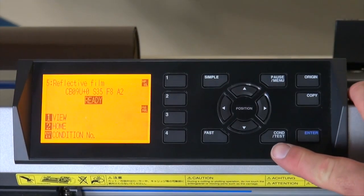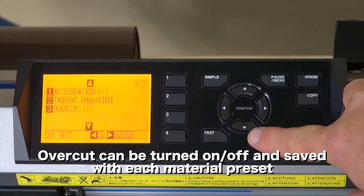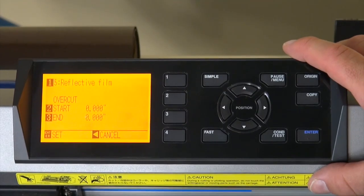To access the Overcut feature, press your Condition Test button and then your down arrow twice, 3 for Overcut. Now you'll notice you have Start and End.